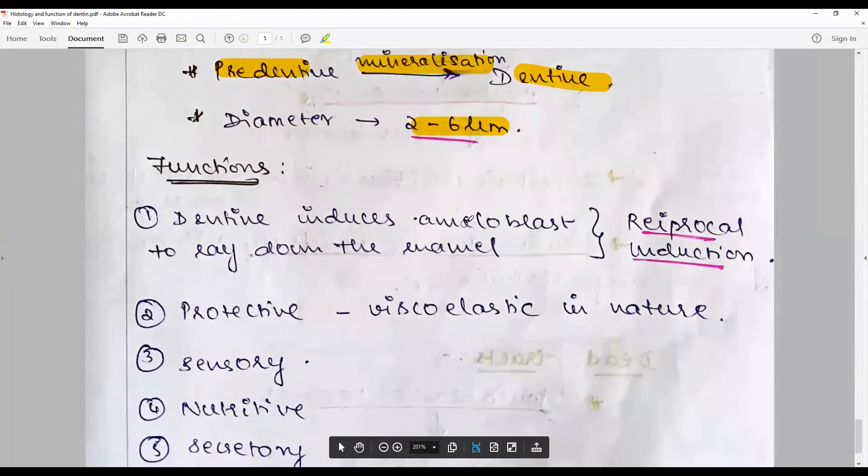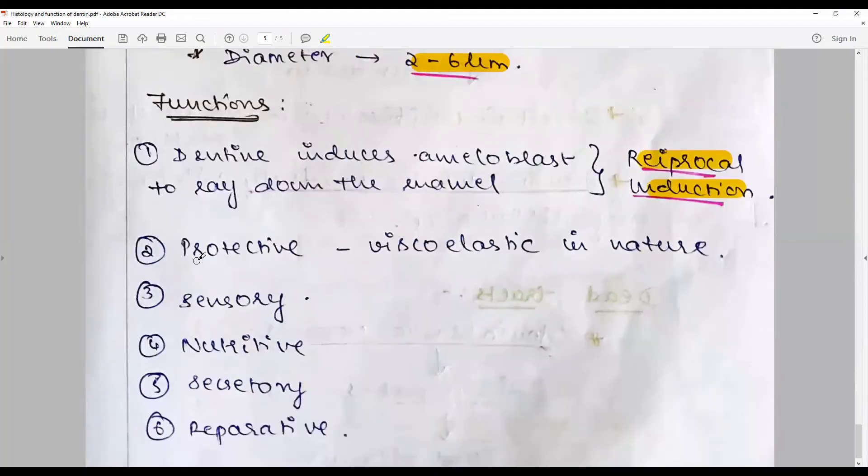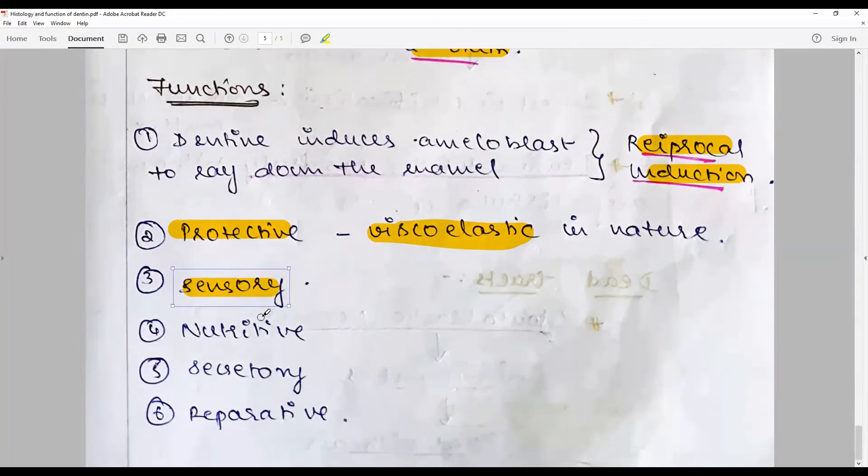The functions of dentin: to induce ameloblasts to lay down the enamel by the phenomenon of reciprocal induction. Protective, because enamel is brittle; dentin is viscoelastic in nature, thereby protecting the entire dental apparatus. Sensory by the theory explained by transduction or hydrodynamic theory.